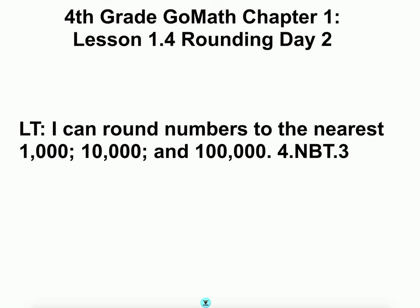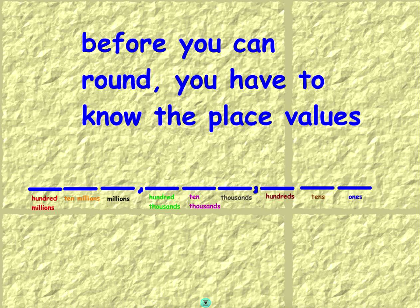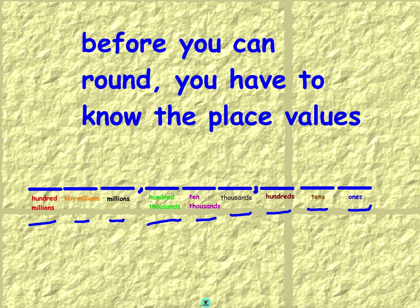Before you can round, you have to know your places. You have to be able to find a digit and tell us what place it is — you have to know where the hundreds place is, where the thousands place is. Looking at the place value chart: ones, tens, hundreds, thousands, ten thousands, hundred thousands. There is also a period of millions — millions, ten millions, hundred millions — but we will be focusing on rounding numbers only up to the hundred thousands.